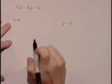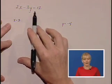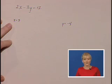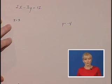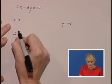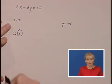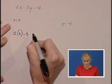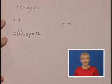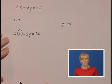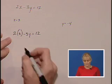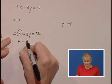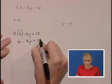Again we have our original equation 2x minus 3y equals 12, and we'd like to solve that when x is 3 to find the ordered pair. So we'll replace x with 3 and we'll simplify the left hand side and solve for y. 2 times 3 is 6 minus 3y equals 12.